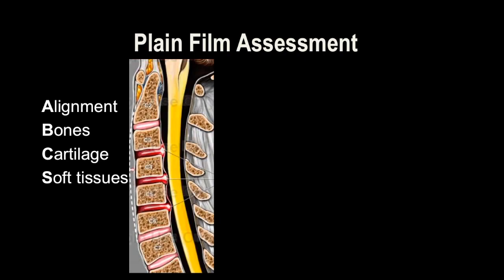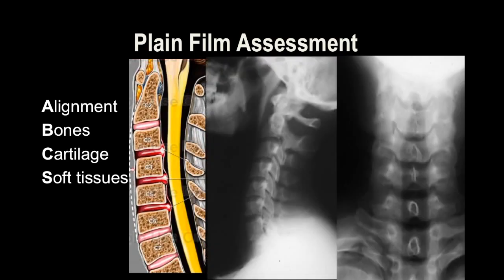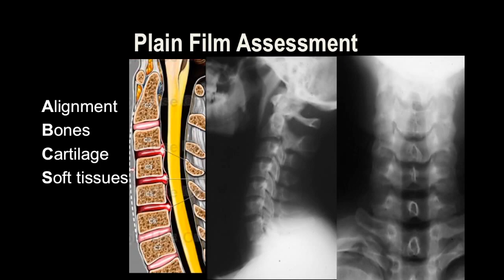Here we have an example of a normal cervical radiograph. The alignment is nice, all the bones look fine, equally mineralized and symmetric. The intervertebral disc space is maintained at all levels — that's our way of assessing the disc even though we don't directly see them. We also look for soft tissue swelling if present, though sensitivity is not very high.